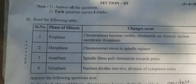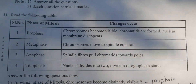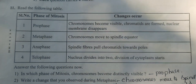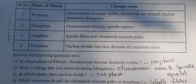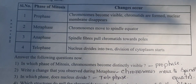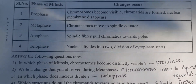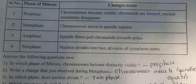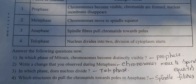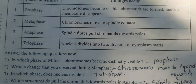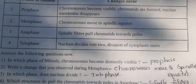Section 3, eleventh question: read the following table on mitosis phases. There are four phases. First question: in which phase do chromosomes become distinctly visible? Answer: prophase. Second: what change occurs during metaphase? Answer: chromosomes move to the spindle equator. Third: in which phase does the nucleus divide? Answer: telophase. Fourth: which structures pull chromatids toward the pole in anaphase? Answer: spindle fibers.